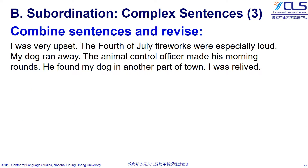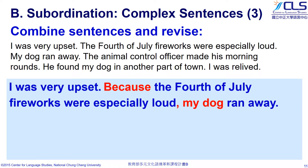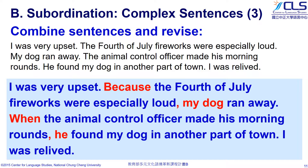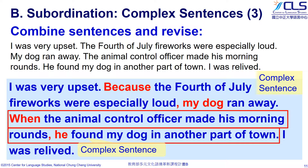Here, we give it another try. We have six sentences in one paragraph. Can we make it simpler? Sure. Once we find out the causal or chronological relationship between sentences, we can make them into one complex sentence. Here we have two examples: 'The author's dog ran away because of the fireworks,' and 'The dog was found when the animal control officer came during his morning rounds.' These sets of sentences can be rewritten into two complex sentences.